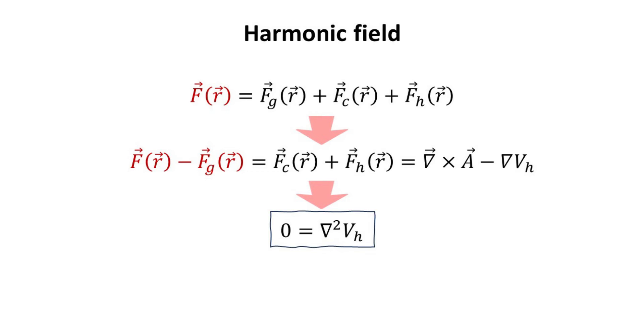Taking the divergence on both sides of the equation, and since the divergence of F equals that of F_G, we arrive at the Laplace equation for V_H. Here we seek a harmonic solution to V_H that satisfy the boundary condition as imposed by the vector field F minus F_G.